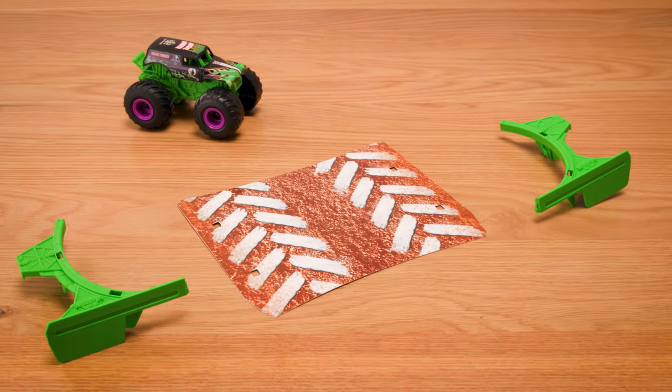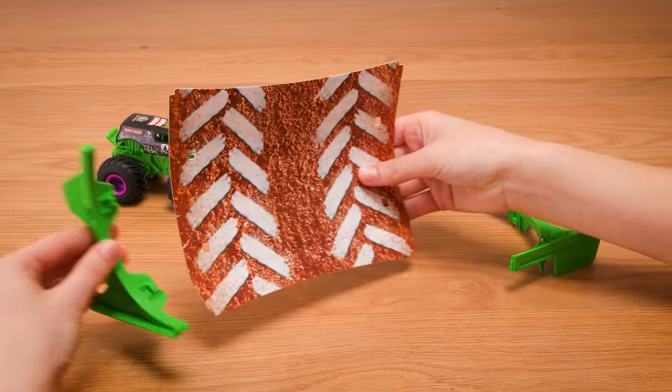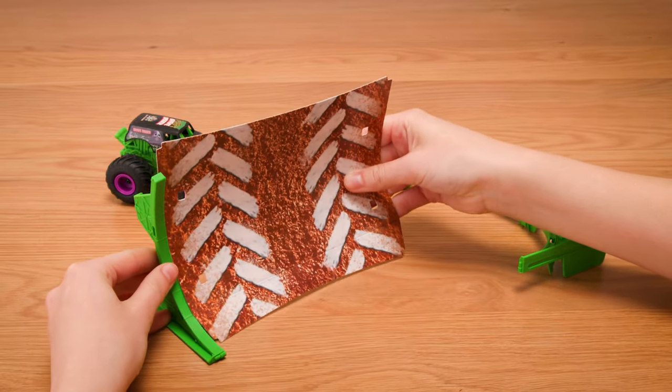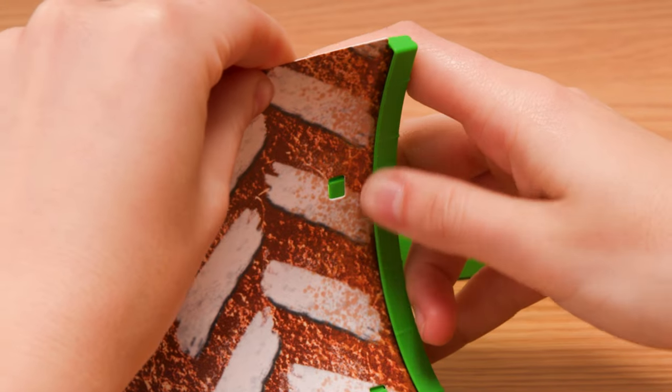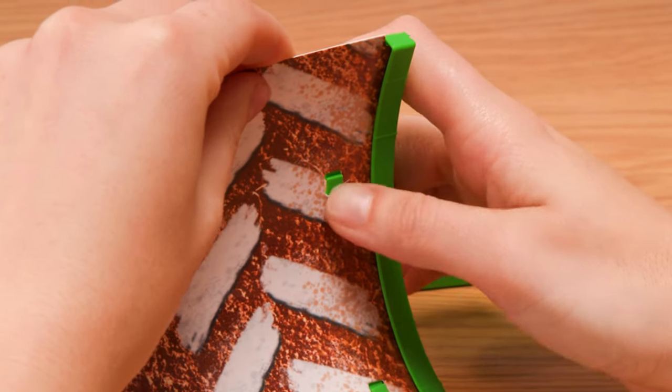Now it's time to assemble the backflip ramp. First, place the left and right supports on the side of the ramp surface and slide into place. Bend it on the curve and make sure all sides are pressed into the teeth of the frame.